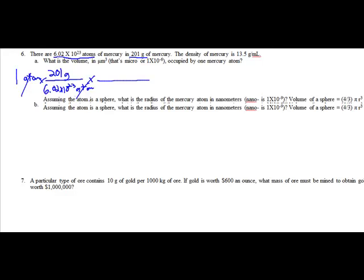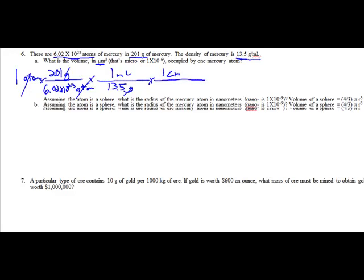All right. So now I have grams. But they're asking, what is the volume? Well, over here I have my density being 13.5 grams per milliliter. Well, I have grams here, so I know my 13.5 grams go on the bottom, one milliliter on top. I'm getting closer. My grams go away. I'm trying to get a volume in micrometers cubed, and I have milliliters. I know from the previous problem that one centimeter cubed is one milliliter. So now I'm in centimeters cubed. I need micrometers cubed.